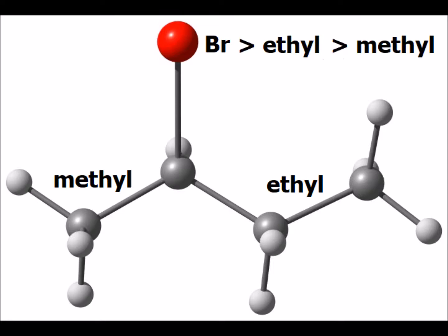According to the Cahn-Ingold-Prelog rules, bromine has priority over the ethyl group, which has priority over the methyl group.